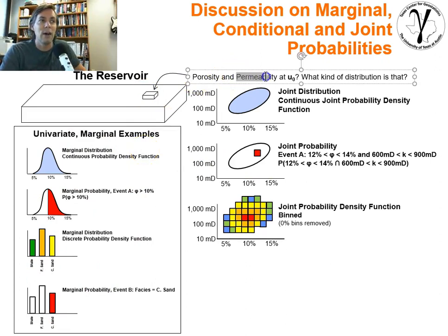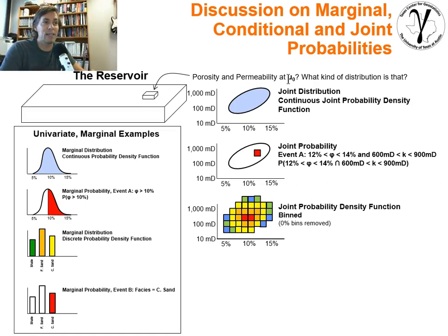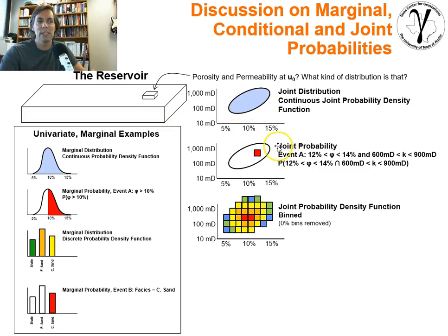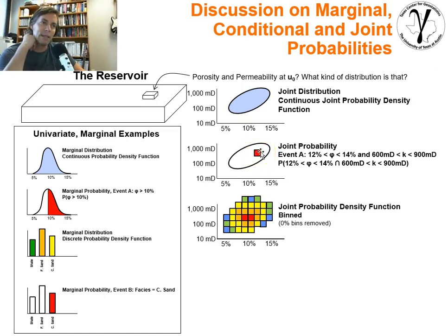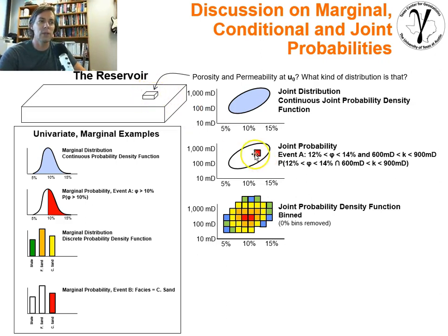Now let's introduce the idea of permeability. We also have permeability at that location — we want to know what it is, and we also want to know porosity. We now have a joint distribution, because we're dealing with more than one property — two properties at the same time. It's a continuous joint probability density function, since both are continuous. We could have a specific joint probability if we specified conditions on each: event A could be porosity between 12% and 14%, and permeability between 600 and 900 millidarcies. We could calculate a single joint probability of having a value at that unknown location within those ranges.